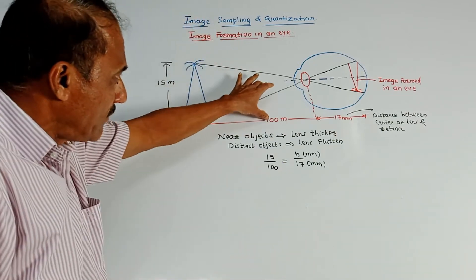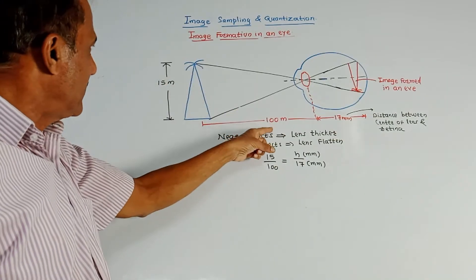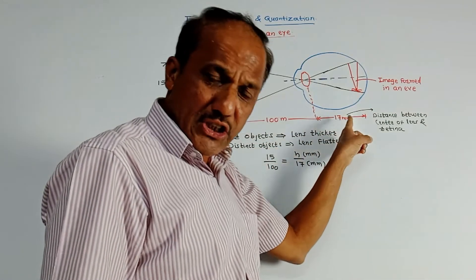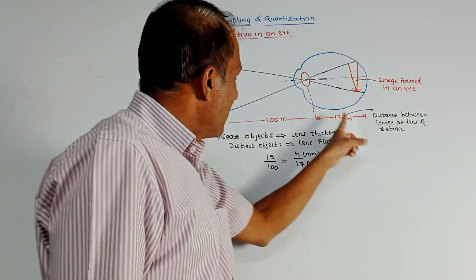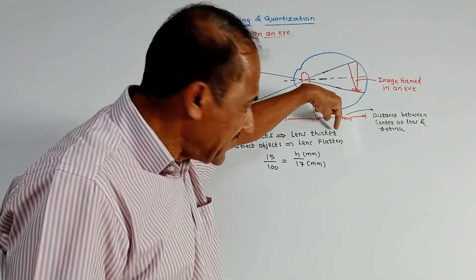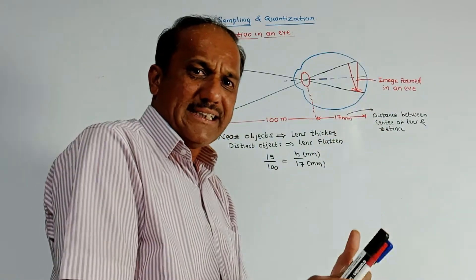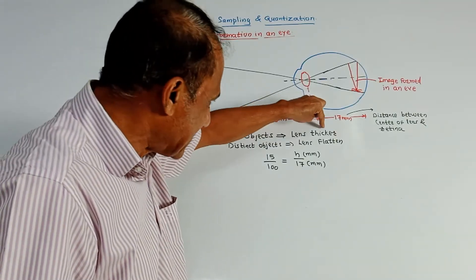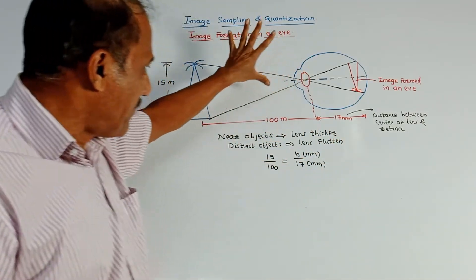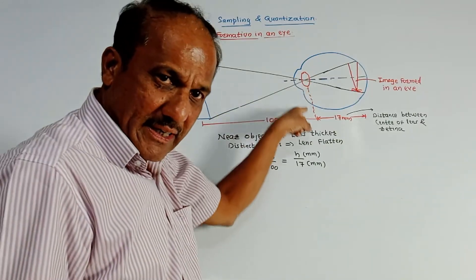As shown in this diagram, suppose the observer wants to view a tree whose height is 15 meters and the observer is at a distance of 100 meters. The distance between lens and retina is 17 mm. To view nearby objects, the lens is made thicker; to view distant objects, flattening of the lens takes place. This thickening and flattening is controlled by the fibers present in the eye.